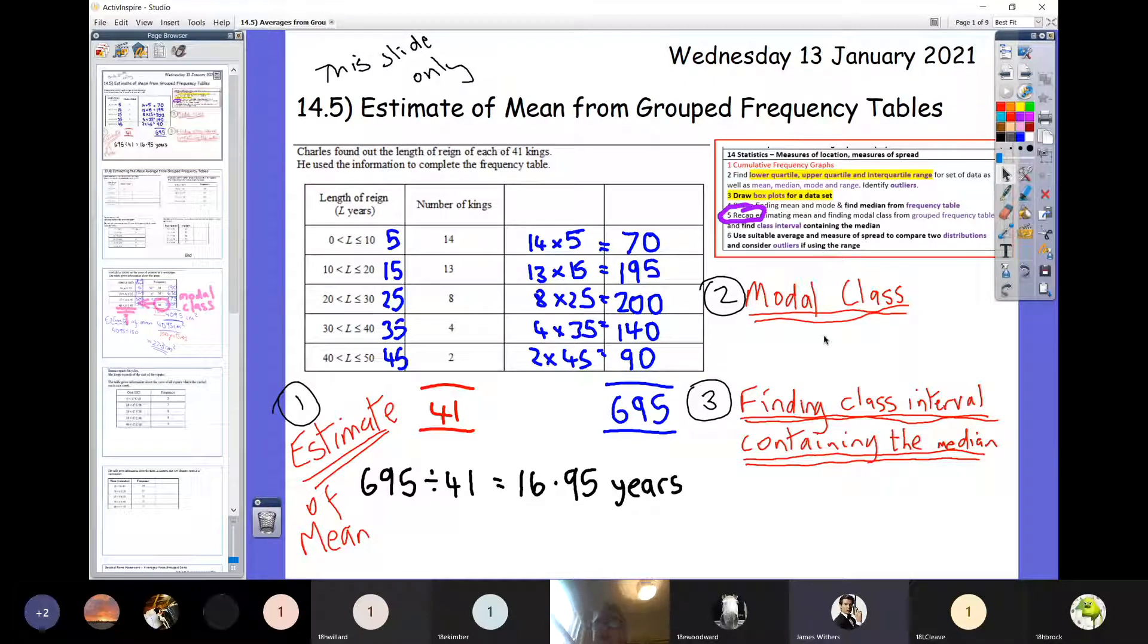This is also a recap. You'll see from the scheme of work on the right hand side that 14.5 was to recap estimating the mean and finding the modal class from frequency tables. This is very similar to what we were doing yesterday. The only difference is that first column, which says length of reign.